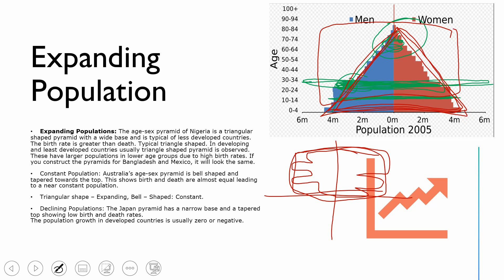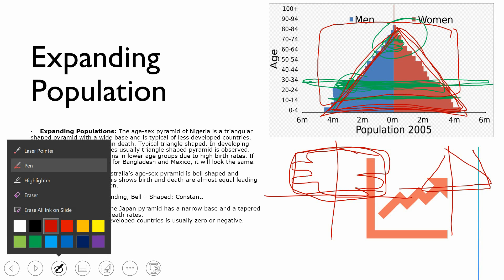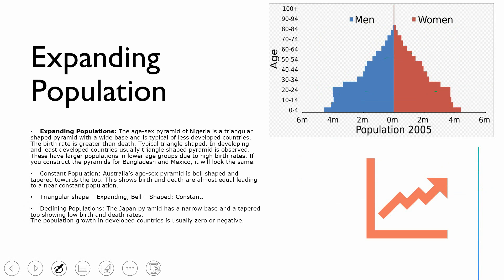Despite having a pyramidal structure, India is not rising as per its population potential because of many unskilled laborers, illiteracy, lack of job opportunities, and lack of infrastructural development. These are the reasons behind India not fully utilizing its youth population.